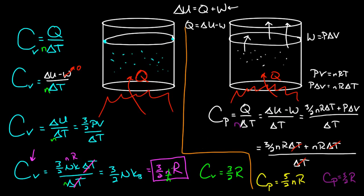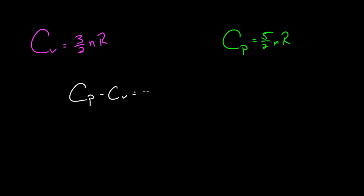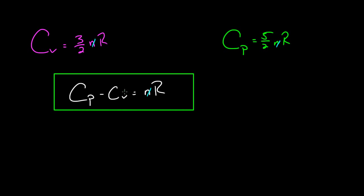Notice they're almost the same. The heat capacity at constant volume is 3/2 nR, and the heat capacity at constant pressure is 5/2 nR — they differ by just nR. So Cp minus Cv equals nR. And if you take the difference between the molar heat capacities at constant volume and pressure, it's just R. This is an important relationship between the heat capacity at constant pressure and the heat capacity at constant volume.